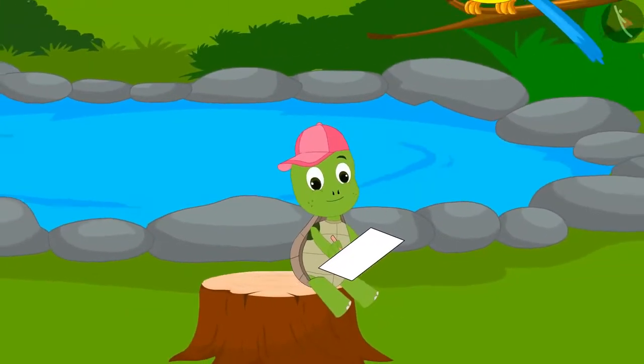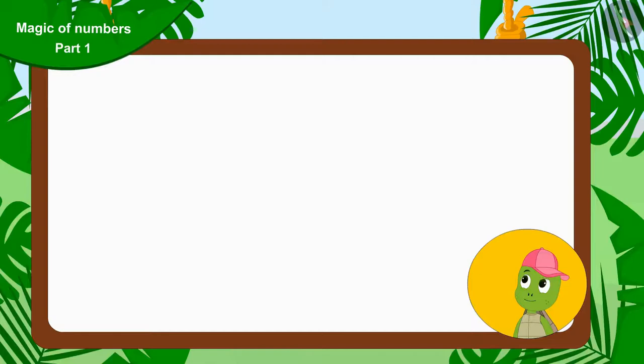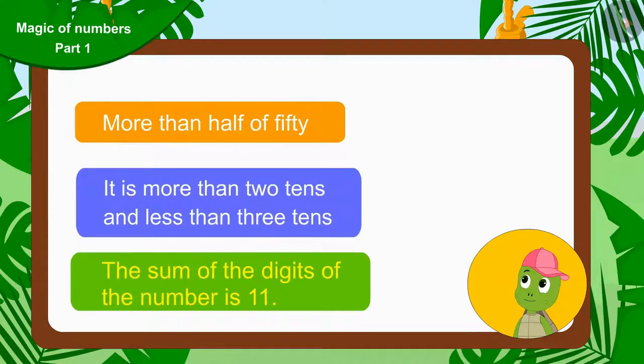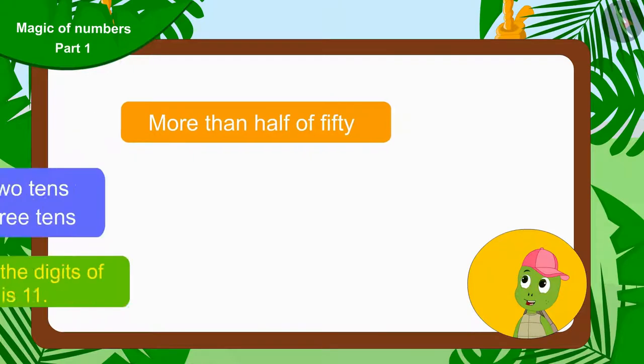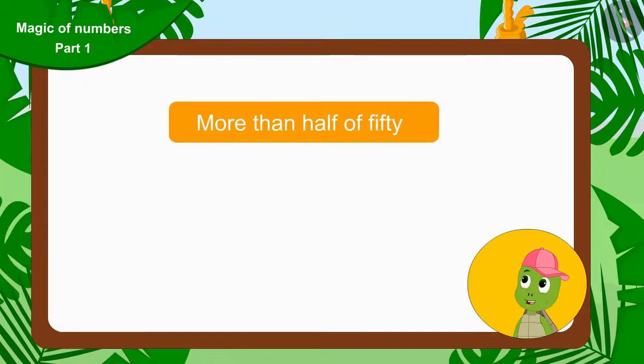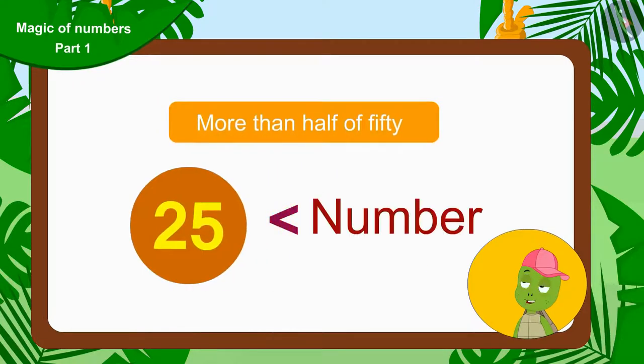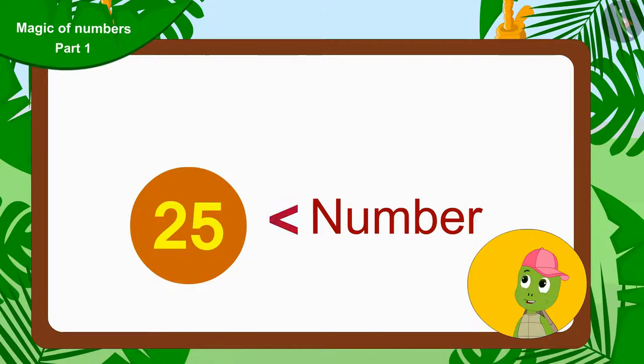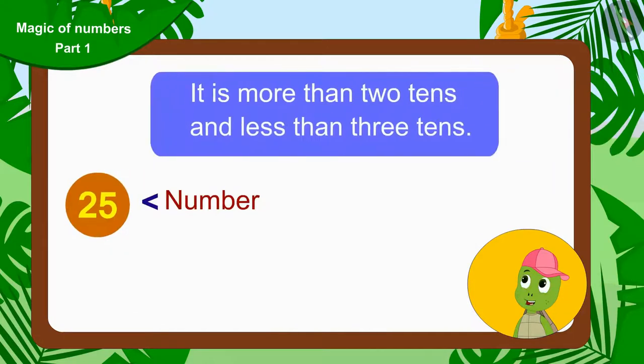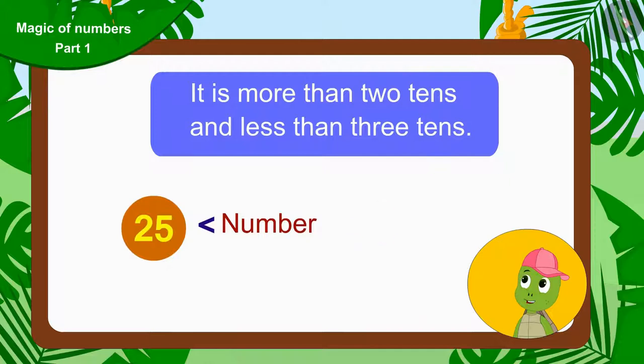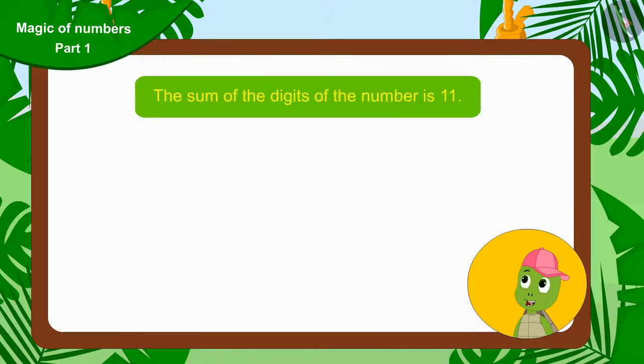Tufan wrote down all the hints of the bird on a paper and began to solve each one of them. 'The number is more than half of fifty. Half of fifty will be twenty-five. This means this number is greater than twenty-five. According to another hint, this number is more than two tens and less than three tens. That means this number is more than twenty-five and less than thirty.'